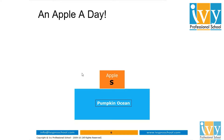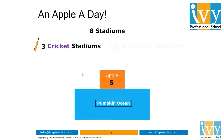If I want to know how many stadiums are there in this country, I can now do it easily. There are eight stadiums, out of which three are cricket stadiums and five are football stadiums. Cricket is played by hitting a moving ball with a bat, and football is played by hitting a ball — which is bigger than a cricket ball — with the legs.